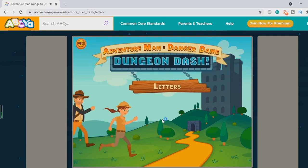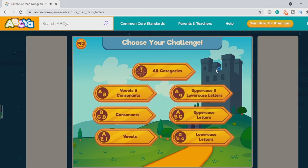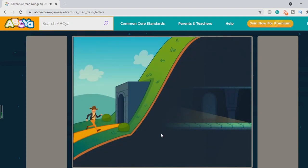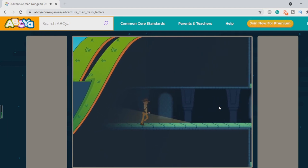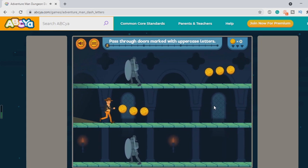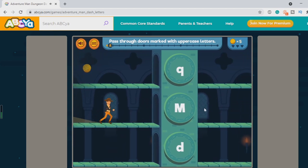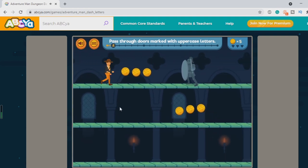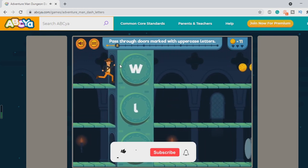Play. Go for Adventure Man. Choose your challenge. So we'll go for uppercase letters. So the idea of this game is to only go through the door with the uppercase letter. So I'll, let me see here. So we have Q. Go down. Go down. Into M. Happy Days. So keep playing through the game until the end.